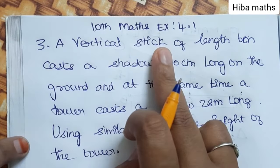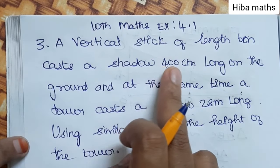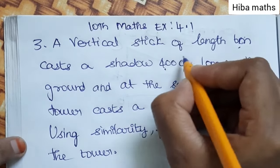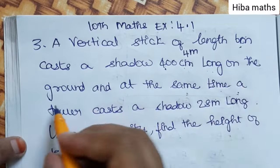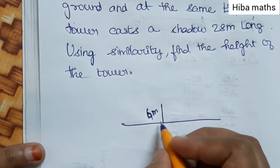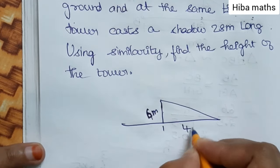A vertical stick of length 6 meters casts a shadow 4 meters long on the ground. First, there is a stick in the ground. The stick's height is 6 meters. The stick casts a shadow on the ground. The shadow is 4 meters.